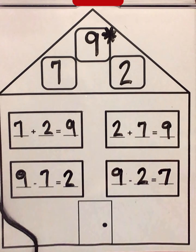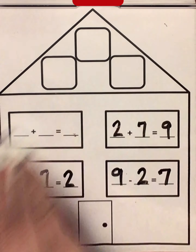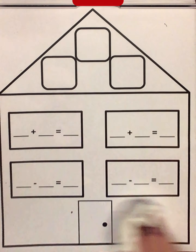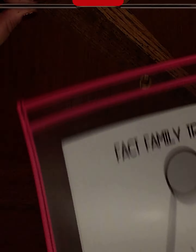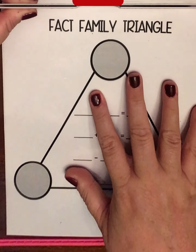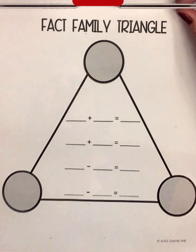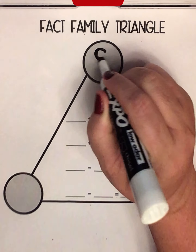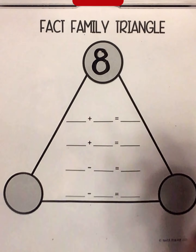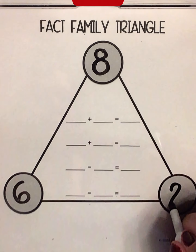Now, we can look at fact families in a different way. This is a fact family house, but we're going to take a look at a fact triangle next. A fact triangle works exactly the same as a fact family house. For this one, we are going to do 8, 6, and 2.